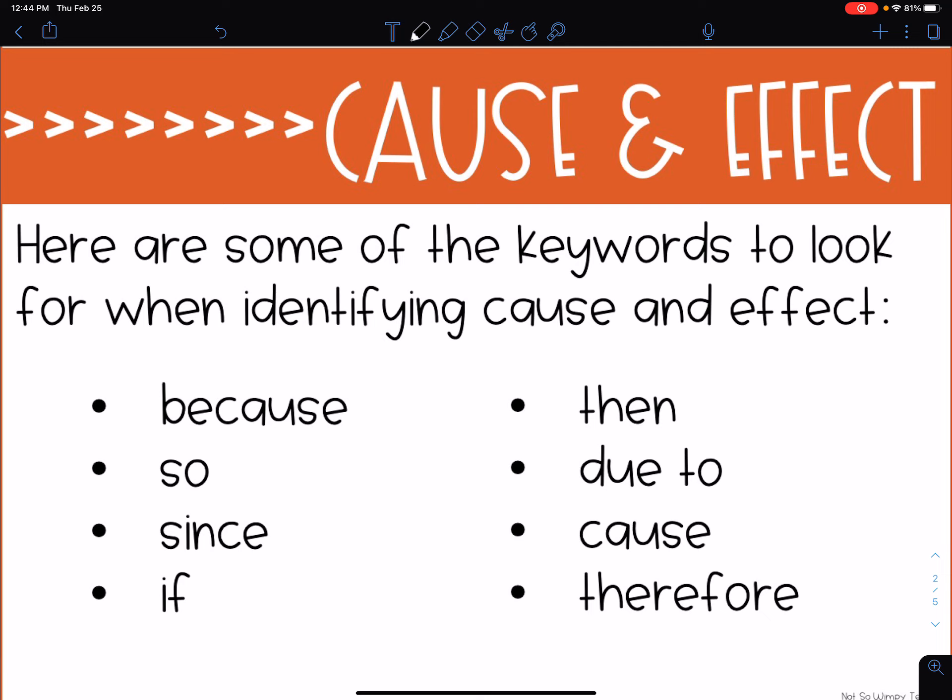These signal words are: because, so, since, if, then, due to, cause, and therefore. These words are going to help us identify cause and effects in a story when we're reading.